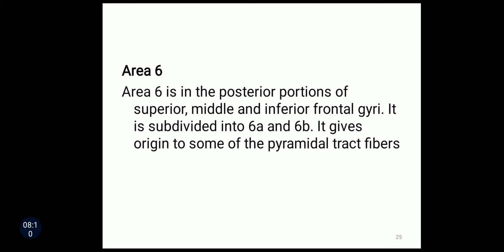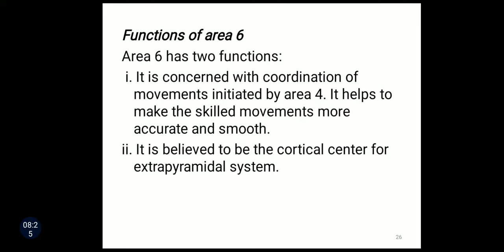Area number six is in the posterior portions of the superior, middle, and inferior frontal gyri. It is subdivided into six A and six B and gives origin to some of the pyramidal tract fibers. Its functions are: first, it is concerned with coordination of movements initiated by area four and helps to make skilled movements more accurate and smooth; second, it is believed to be the cortical center for the extrapyramidal system.